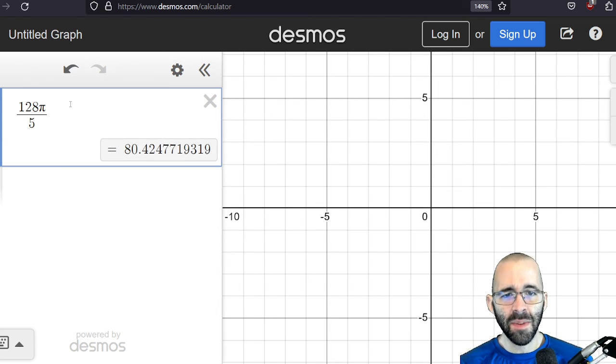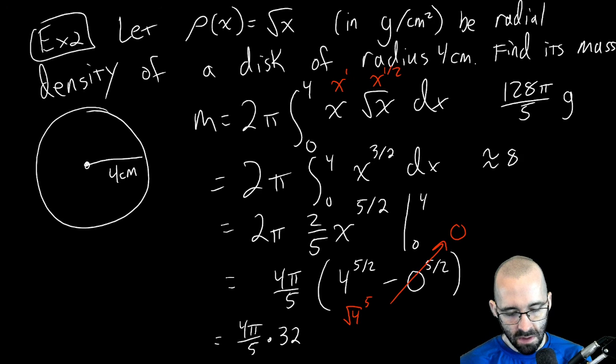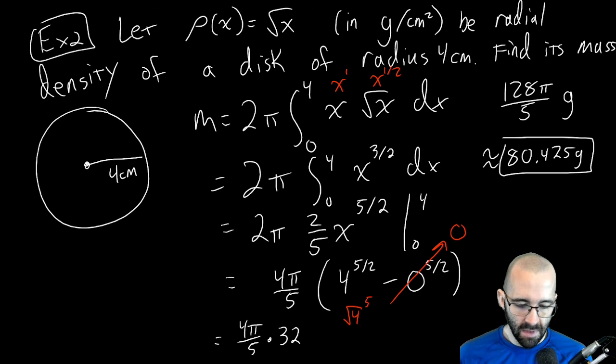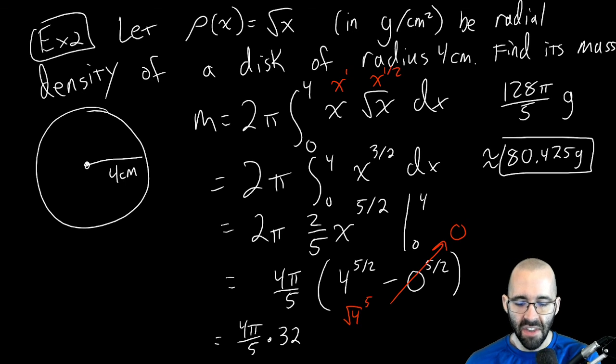Exact is good for most of this class, but for applications, if you say the weight of something is 128π/5, nobody really knows what you're talking about. It's about 80.425 grams.